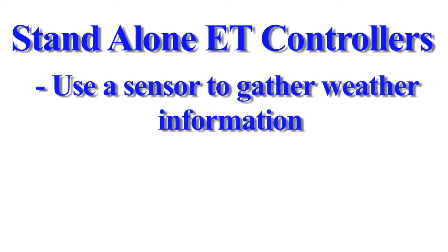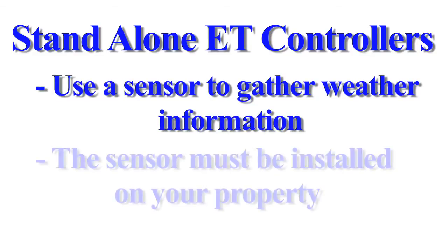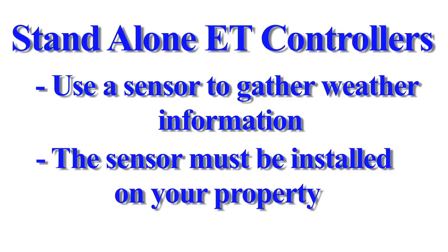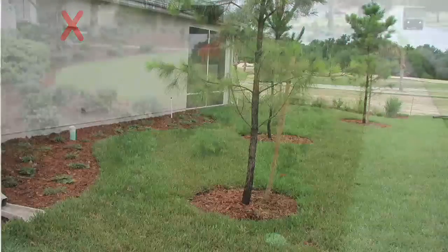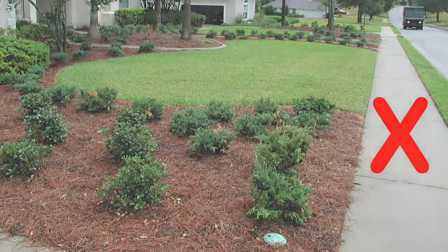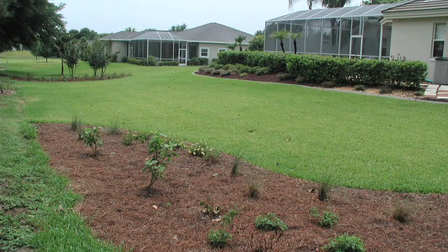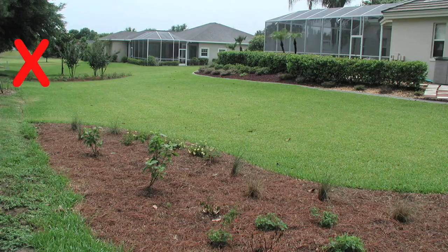Stand-alone ET controllers use on-site sensors to gather weather data and calculate ET. These sensors have to be installed in the landscape or on the side of a house. Where you choose to locate your sensor is important. The sensor must not be obstructed by the roof or placed near outdoor appliances or structures that emit heat, such as air conditioning units, dryer vents, sidewalks, and driveways. For best results, the sensor should be placed in a relatively open area that has adequate airflow and is not obstructed by trees. Improper placement of the sensor could lead to over or inadequate irrigation.